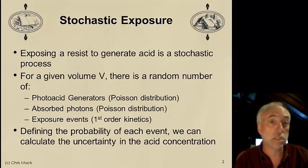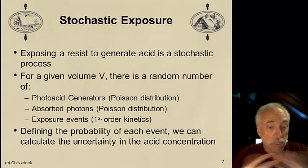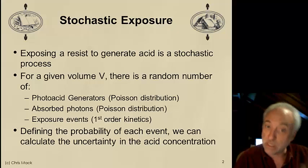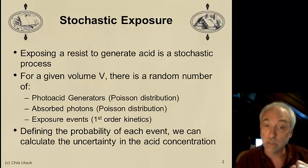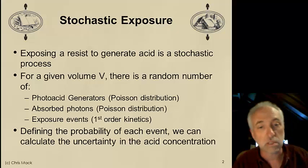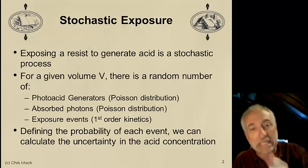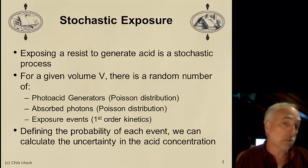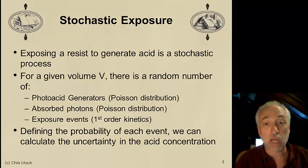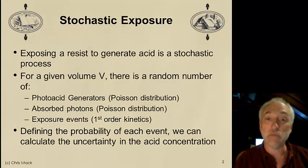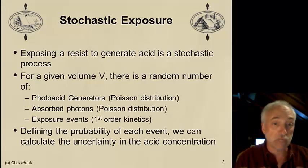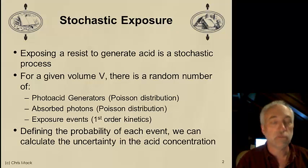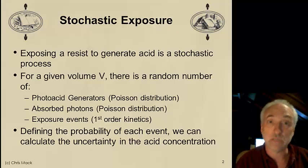One source was the photons themselves. We shine light onto a resist, but light's made up of photons, and photons are a statistical quantity. We cannot guarantee an exact number of photons when we expose by a certain dose. Instead, photons are counted with a Poisson distribution — there's a certain uncertainty in the number of photons, and we say that there's photon shot noise.